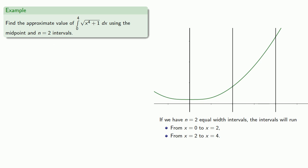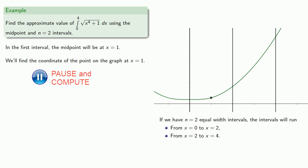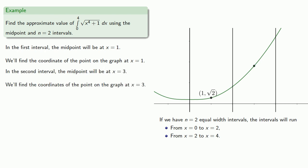So in the first interval, the midpoint will be at x equals 1, and so we'll find the coordinates of the point on the graph at x equals 1. In the second interval, the midpoint will be at x equals 3, and again we'll find the coordinates of the point on the graph at x equals 3.